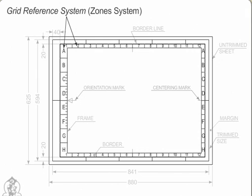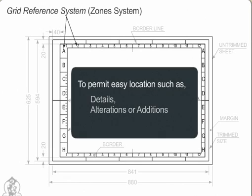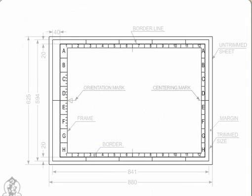Grid Reference System — Zone System. The grid reference system is drawn on the sheet to permit easy location on the drawing, such as details, alterations, or additions. The rectangles of the grid along the length should be referred to by numerals 1, 2, 3, and so on.